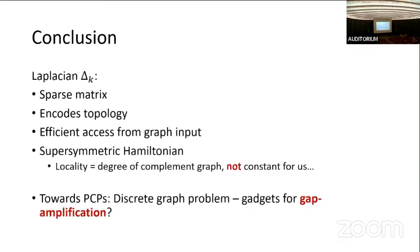To conclude: the main takeaway is that this Laplacian is a sparse matrix — it's very large, but we have efficient sparse access to it from the description of the space. This is very good for quantum algorithms and for finding quantum mechanical structure in these problems. The Laplacian encodes topology that we care about and it's related to supersymmetric quantum mechanics.